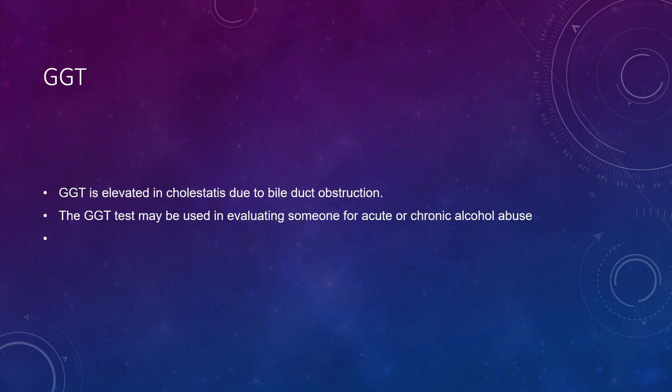GGT is another enzyme. It is elevated when there is a block in the biliary tract, such as from gallbladder stones. GGT is usually increased in such conditions. Specifically, GGT is a strong marker for alcohol-related liver damage — elevated GGT indicates the liver has been affected by alcohol consumption.